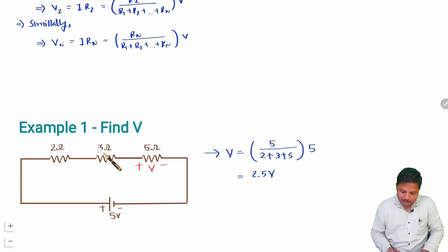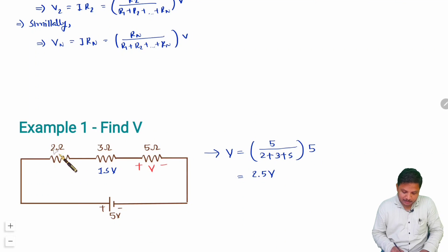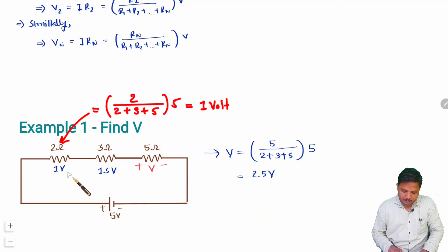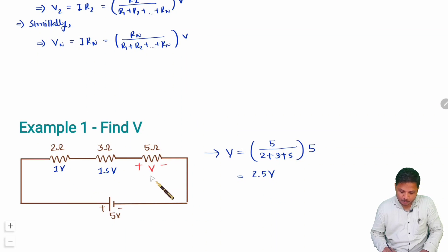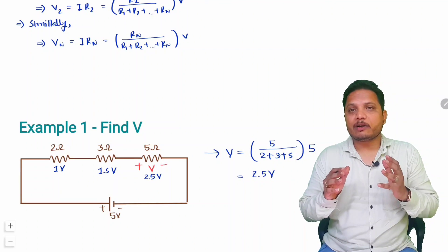To calculate voltage across the 3Ω resistor: V = 3 / 10 × 5 = 15 / 10 = 1.5 volts. And voltage across the 2Ω resistor: V = 2 / 10 × 5 = 10 / 10 = 1 volt. Verification: the 5V supply is dropping across all resistances — 1 + 1.5 + 2.5 = 5 volts. That is how voltage divider rule functions.